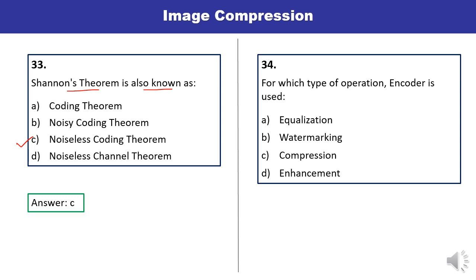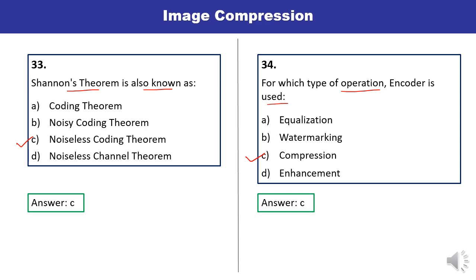Question 34: For which type of operation is an encoder used — equalization, watermarking, compression, or enhancement? An encoder is used to encode information or data which is to be transmitted, and it involves compression. This is the correct answer.